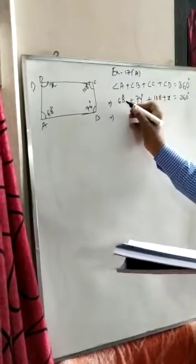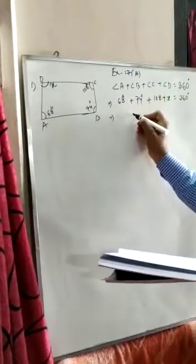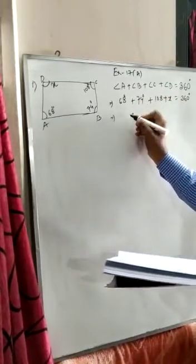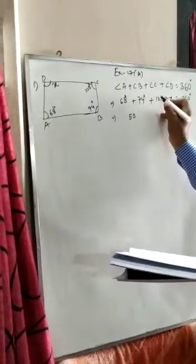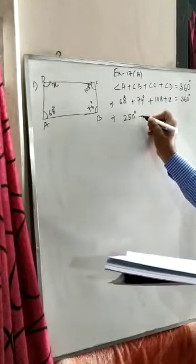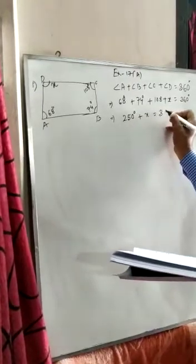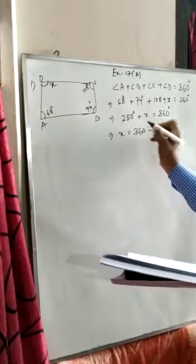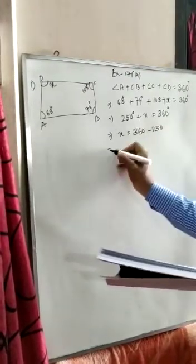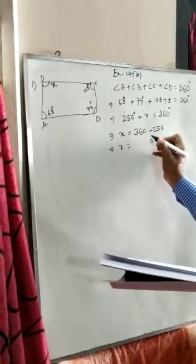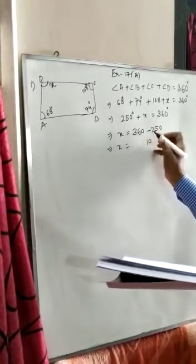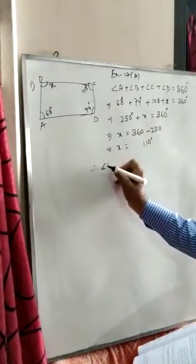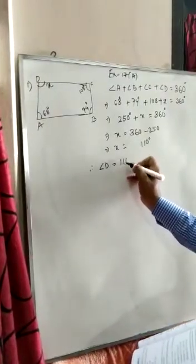Adding: 68 + 74 + 108 = 250 degrees. So 250 + X = 360, which gives X = 360 − 250 = 110 degrees. Therefore, angle D = 110 degrees.